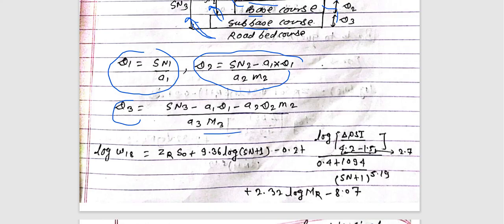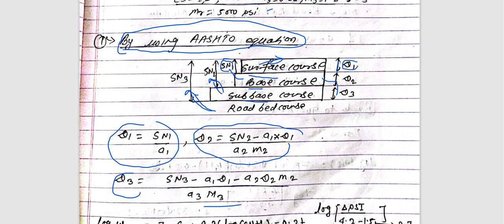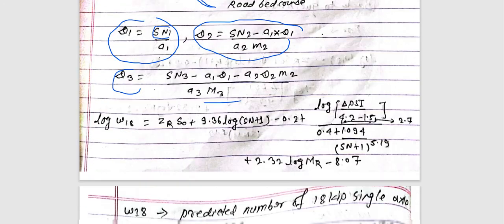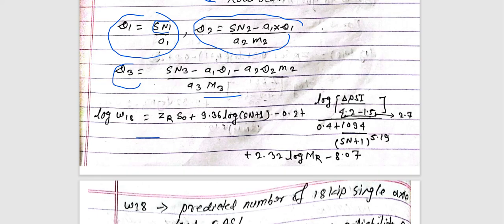So to find d1, d2, d3, we need to find SN first. The formula: log W18 is equal to ZR — using this formula. The W18 is the predicted number of 18-kip single axle load, which is the ESAL value.